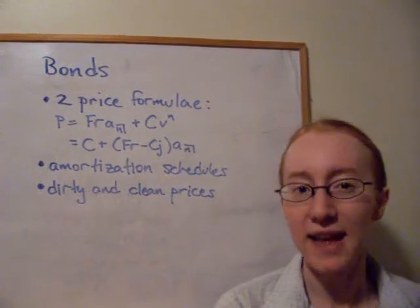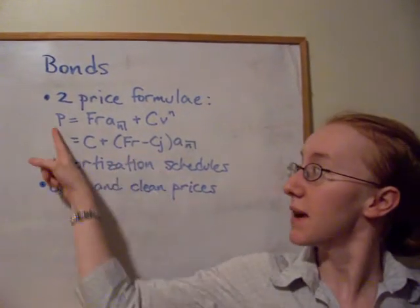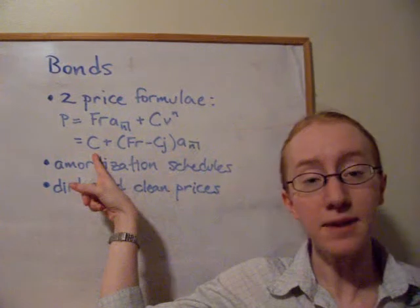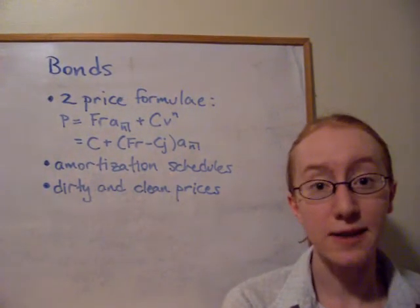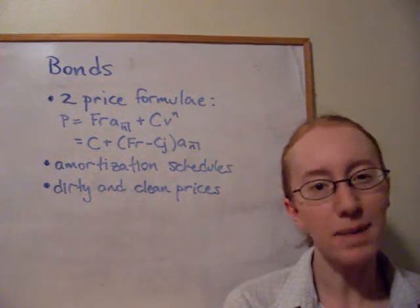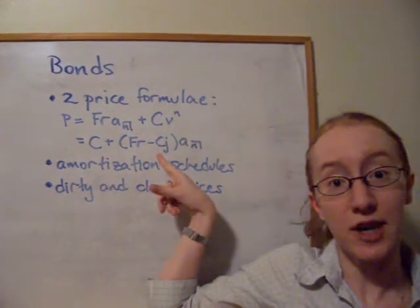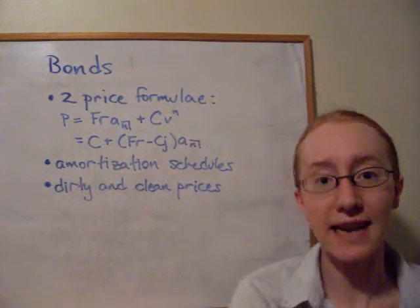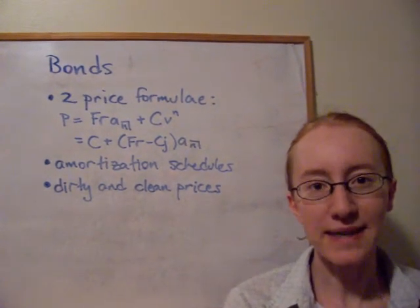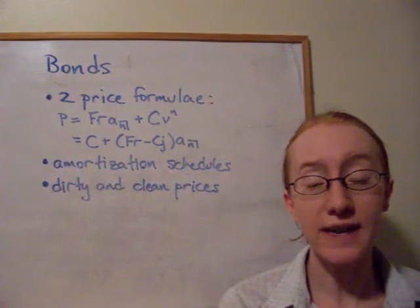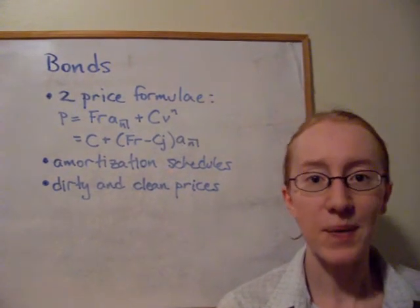Another slightly different way is to manipulate that formula, and we end up with the price being the redemption value plus a certain amount times an annuity factor. That amount could be positive or negative depending on the relationship between FR and Cj. If Cj is bigger, that amount will be negative; if Cj is smaller, it will be positive. This difference determines whether a bond is sold at a discount or at a premium.